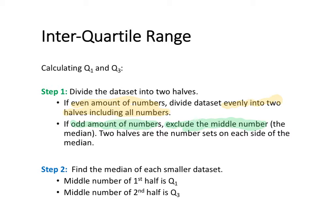So the first step is to divide the data set into two halves. The second step is then, for each of those halves that we have created, you need to find the median of those halves. The median of the first half is going to be quartile 1, and the median of the second half is going to be your quartile 3 value.